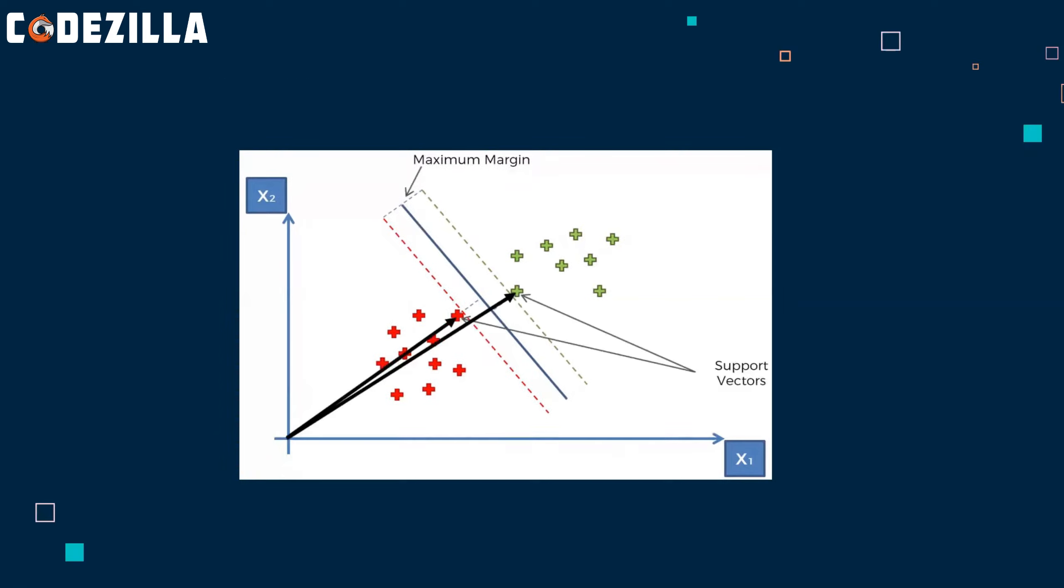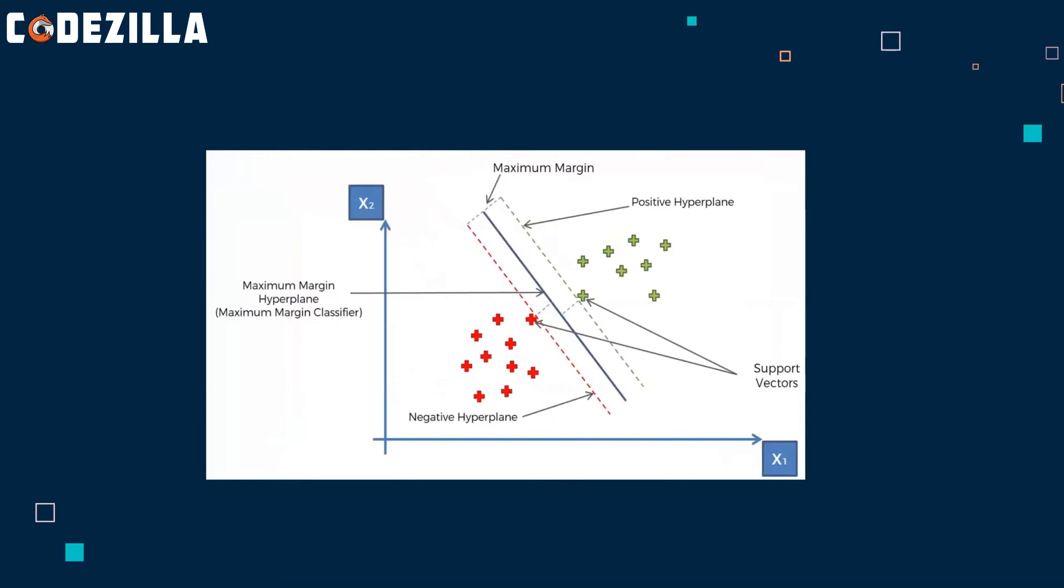And these are the points that are actually support vectors. As name says, two points are supporting the whole algorithm. Even if you remove other data points, nothing will change. The algorithm will be exactly the same only because these two points are contributing to the algorithm. That's why the algorithm is called as support vectors machine. Here, the line in the middle is called as a maximum margin hyperplane or maximum margin classifier. This one is called as the negative hyperplane and this side is called as a positive hyperplane.